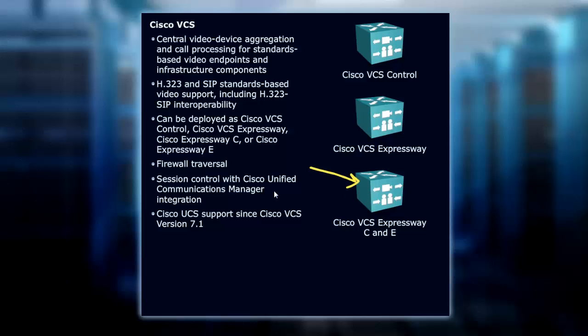Then you've got session control with your Communications Manager integration. It's been supporting these since version 7.1. And with that, you also have the ability to set up call processing for standard-based video endpoints and infrastructure components. With call control, with Expressway, and with your Expressway Core and Edge, all of these different deployment options give you the ability to set up video through the system. You have to have the Core and the Edge to punch through a firewall, but through your local area network or through your WAN connections, you can use these Control and Expressways, tie them back to Communications Manager, and they're going to give you that support for video.